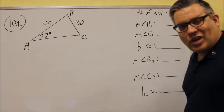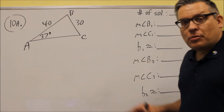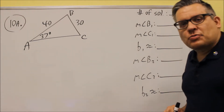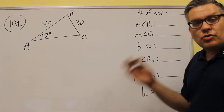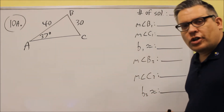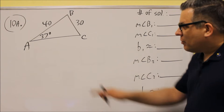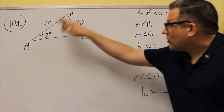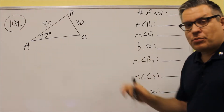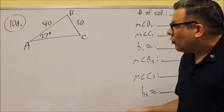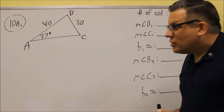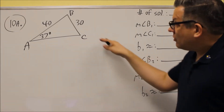Number 10 involves the law of sines. The test will give you blanks to fill in — you may or may not use all of them, depending on whether the triangle has two solutions, one solution, or no solutions. First we need to figure out how many solutions it has. A picture is provided; you fill in the numbers. On this particular problem, with angle A = 37 degrees, side a = 30, and side c = 40, we can now proceed.